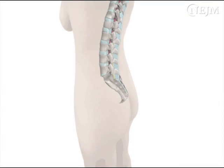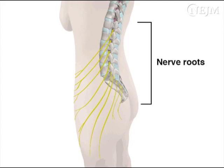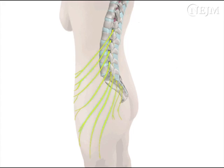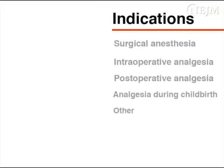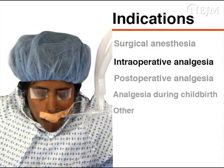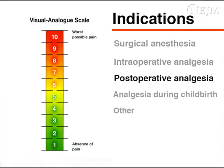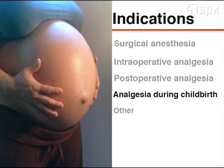Placement of a catheter in the lumbar epidural space allows one to administer analgesic and local anesthetic agents to a series of dorsal and ventral nerve roots that exit the spinal cord and traverse the epidural space, thereby providing anesthesia or analgesia to specific nerve root distributions. A lumbar epidural catheter can be used to induce surgical anesthesia, intraoperative analgesia, postoperative analgesia, or analgesia during childbirth.